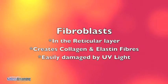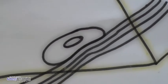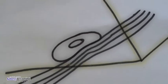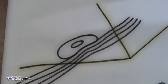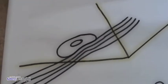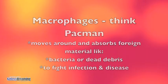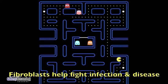Fibroblasts are located in the reticular layer and create collagen and elastin fibres. They are easily damaged by UV light. Macrophages are like Pac-Man — they move around and absorb foreign material like bacteria or dead debris.